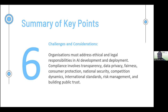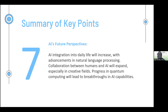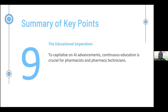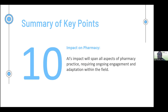Six: Organizations must address ethical and legal responsibilities in AI development and deployment. Compliance involves transparency, data privacy, fairness, consumer protection, national security, competition dynamics, international standards, risk management and building public trust. Seven: AI integration into daily life will increase with advancements in natural language processing. Collaboration between humans and AI will expand especially in creative fields. Progress in quantum computing will lead to breakthroughs in AI capabilities. Eight: AI platforms in pharmacy can automate administrative tasks, enhance clinical trials and improve drug development. Pharmacists will play a key role in leading innovation, validating AI models and shaping the evolution of AI technology. Nine: To capitalize on AI advancements, continuous education is crucial for pharmacists and pharmacy technicians. Ten: AI's impact will span all aspects of pharmacy practice, requiring ongoing engagement and adaptation within the field.